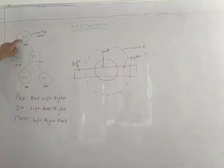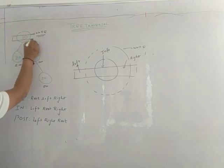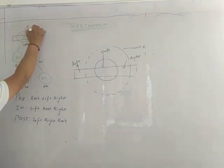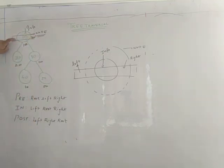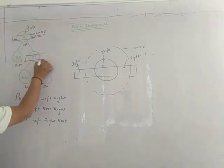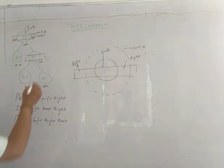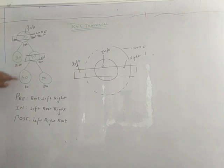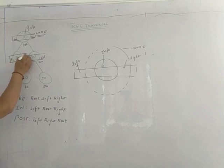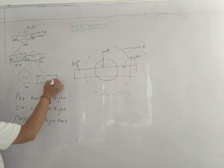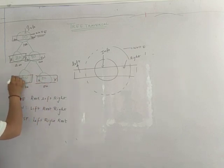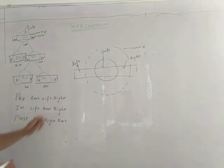The right pointer will contain the address of the right child, which is 300, and the left pointer will contain the address of the left child, which is 200. For node at address 300, the right pointer contains 500. For leaf nodes like these, there is no left and no right, so both will be null.